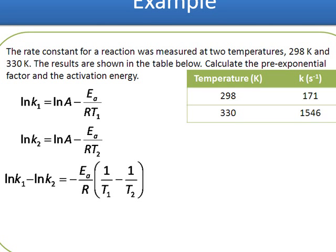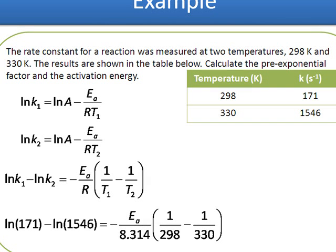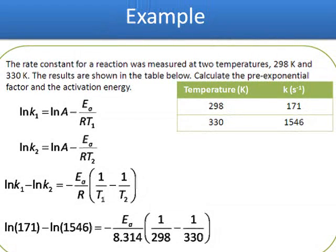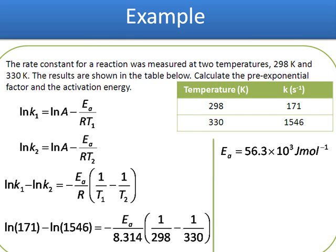All I have to do now is plug in my values. I'm putting in my values across the board. R equals 8.314, that's the gas constant. When I do a bit of rearranging, I get an activation energy of 56.3 kJ per mole.